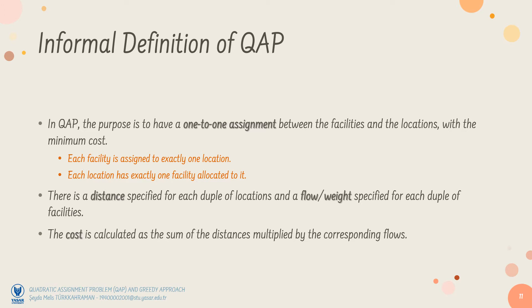I said minimum cost, so I have to provide a cost function. There is a distance between each pair of locations, and there is a weight or flow specified for each pair of facilities. The cost is calculated as the sum of the distances multiplied by the corresponding flows.